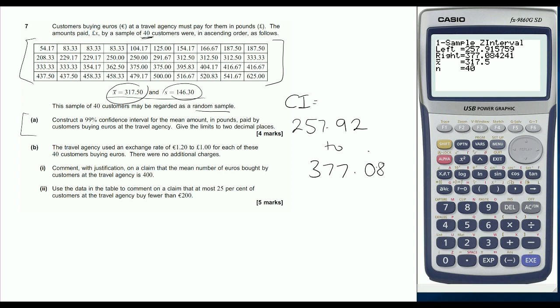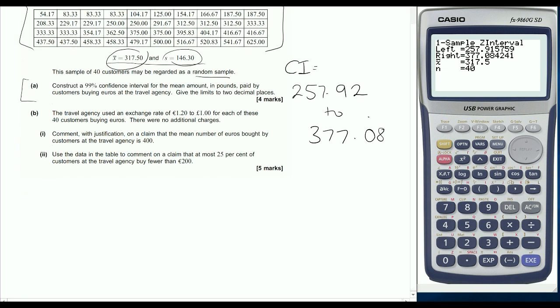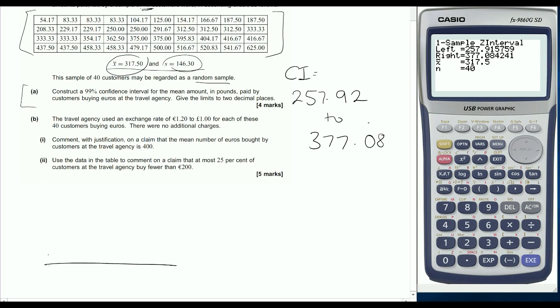If we weren't using a calculator, we would be looking for a 99% confidence interval between these two values. We know the mean is 317.5, and we're looking for those two numbers either side of our mean. We would be using our standardising formula: z is x minus mu over sigma.